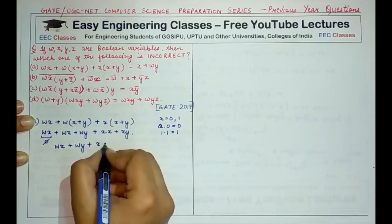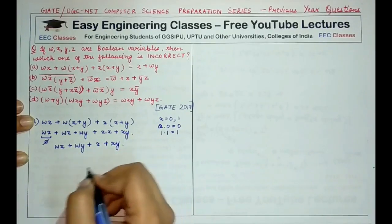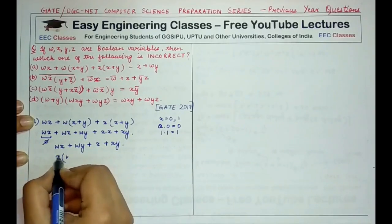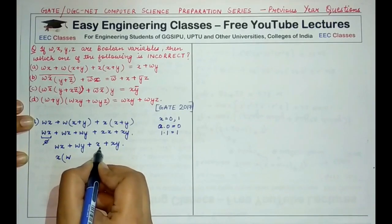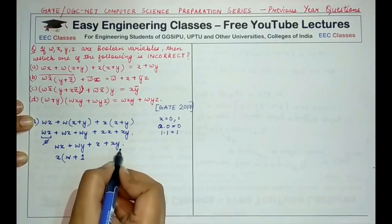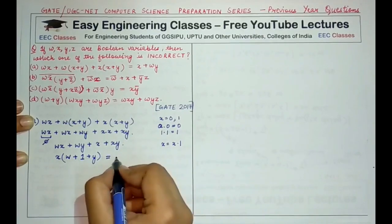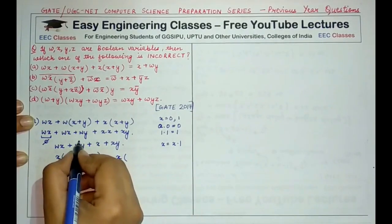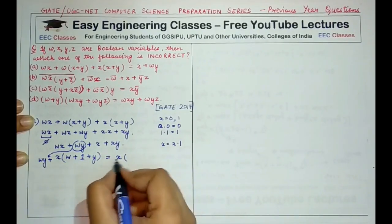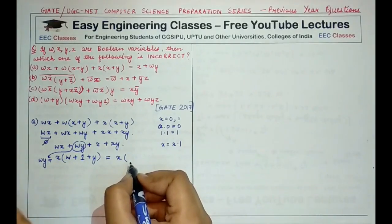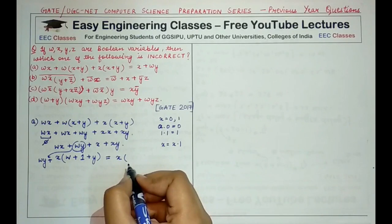So x·x reduces to x. Writing the last term as is: wx + wy + x + xy. Taking x as common: from wx we get w, from x we get 1 (since x = x·1), and from xy we get y. So the expression becomes x·(w + 1 + y) + wy.